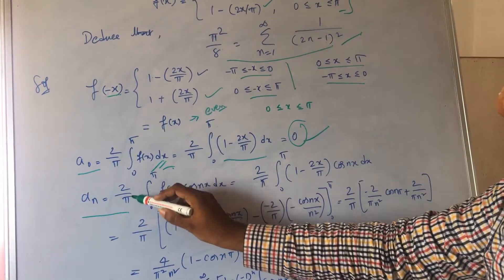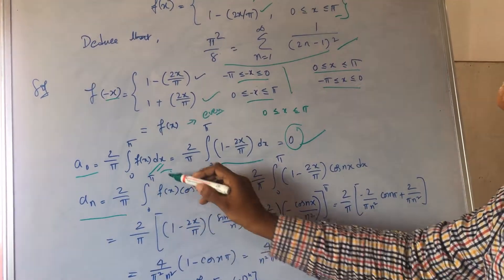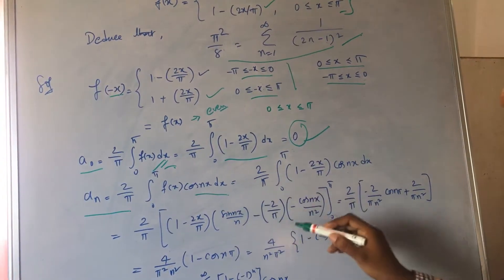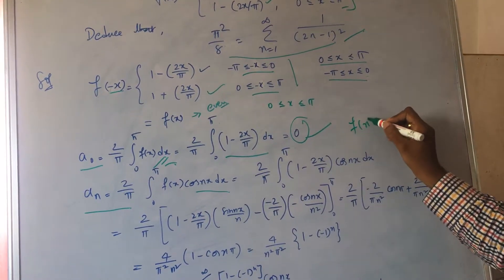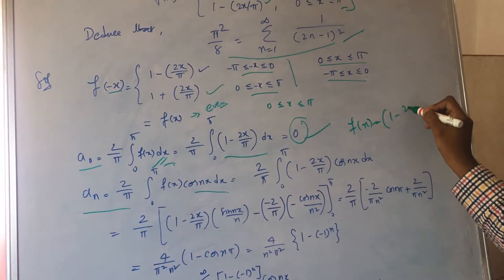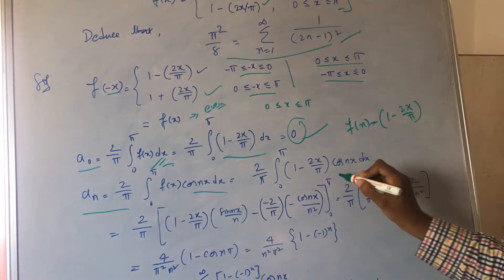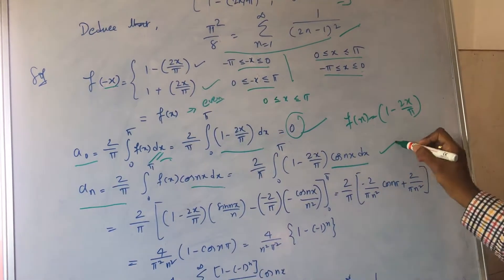The formula corresponds to this: 2 by π integral 0 to π f(x) cos(nx) dx. When I put that function, I will mention this as 1 minus 2x by π. When I substitute this, I get this.